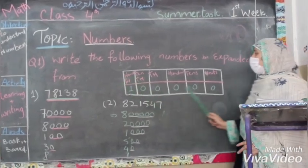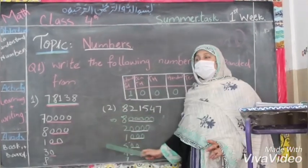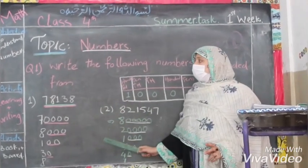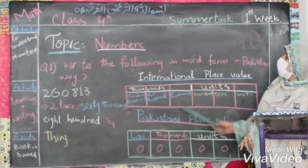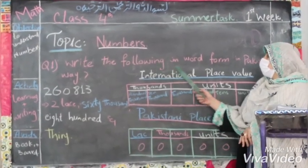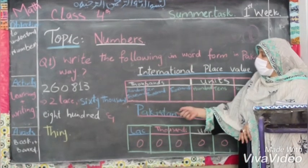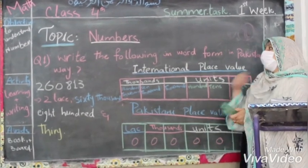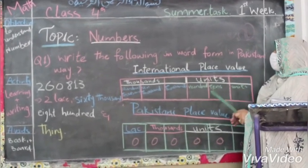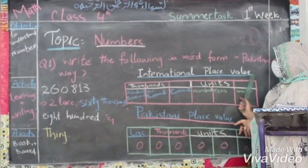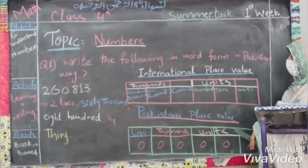First you will study this chart, then you will understand this easily. Question number two: write the following in word form in Pakistani. We have two types of number system. One is the international place value system and another one is the Pakistani place value system.